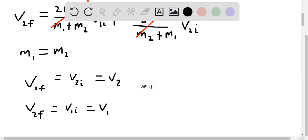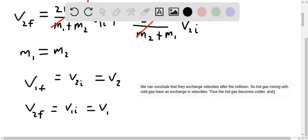We can conclude that they exchanged velocities after the collision. So hot gas mixing with cold gas have an exchange of velocities. Thus the hot gas becomes colder and the cold gas becomes hotter.